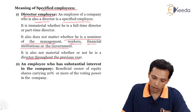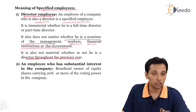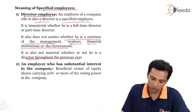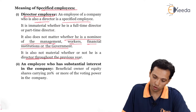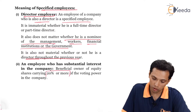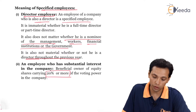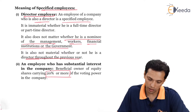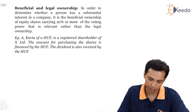The second category is an employee who has substantial interest in the company — that is, a beneficial owner of equity shares carrying 20% or more of the voting power in the company.